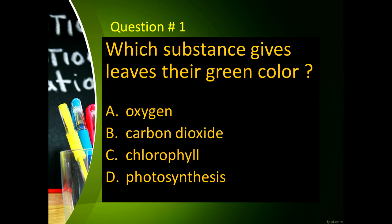Question number 1: Which substance gives leaves the green color? Letter A, oxygen. Letter B, carbon dioxide. Letter C, chlorophyll. And letter D, photosynthesis.